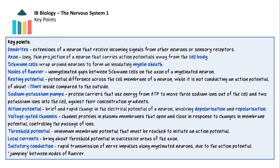In summary, dendrites are extensions of a neuron that receive incoming signals from other neurons or sensory receptors. An axon is the long, thin projection of a neuron that carries action potentials away from the cell body. Schwann cells wrap around neurons to form an insulating myelin sheath. Nodes of Ranvier are unmyelinated gaps between Schwann cells on the axon of a myelinated neuron. The resting potential is the potential difference across the cell membrane of a neuron while it is not conducting an action potential — about minus 70 millivolts inside compared to the outside. Sodium-potassium pumps are protein carriers that use energy from ATP to move three sodium ions out of the cell and two potassium ions into the cell against their concentration gradients.